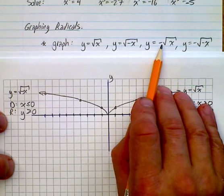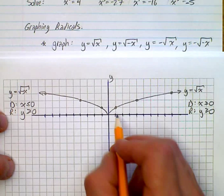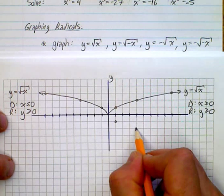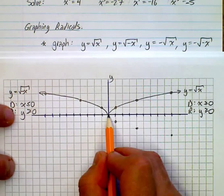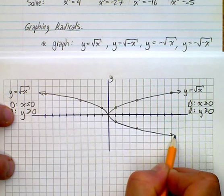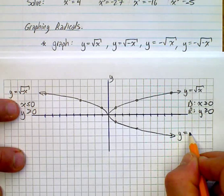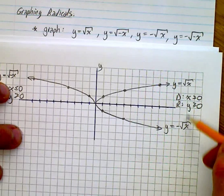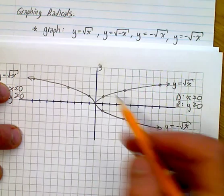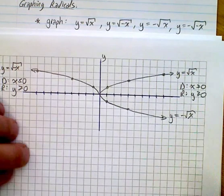If you have a negative in the front — like y = -√x — that's a reflection over the x-axis, because all your y-values become negative and the graph goes downward. You might notice this looks like the bottom half of a parabola. These two pieces — y = √x and y = -√x — make up the inverse of your quadratic function.